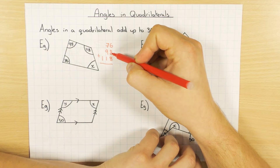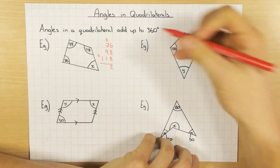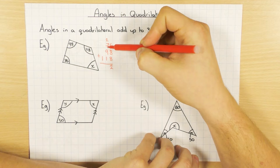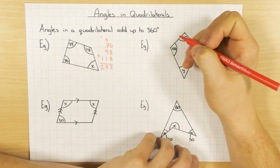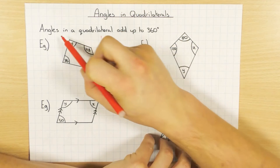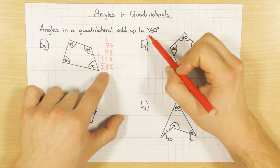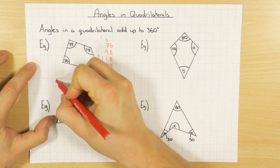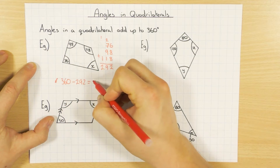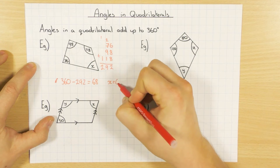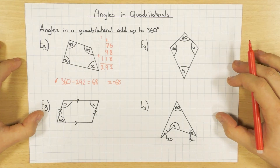So six add eight is fourteen, add eight is twenty-two. So two, carry a two. One add nine is ten, add seven is seventeen, add two is nineteen. So nine, carry one over. And then one add one is two. So I get two hundred and ninety-two. But angles in a quadrilateral add up to 360, so I do three hundred and sixty minus two hundred and ninety-two, which leaves us with sixty-eight. So x, the missing angle, is sixty-eight, because then all the angles add up to three hundred and sixty. That's quite basic and most people can do that.